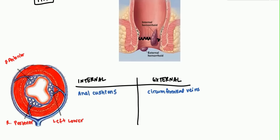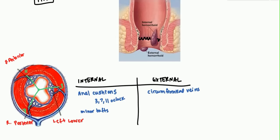These are the three plexuses that commonly become engorged. If you think of the anal canal as a clock face with 12 o'clock at the top, you generally get one hemorrhoid at the 3 o'clock position, one at the 7 o'clock position, and one at the 11 o'clock position. So 3, 7, and 11 o'clock are the most common locations. There are also minor tufts in between these main plexuses that can develop hemorrhoids.